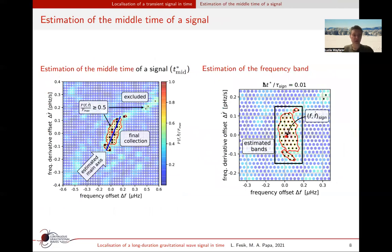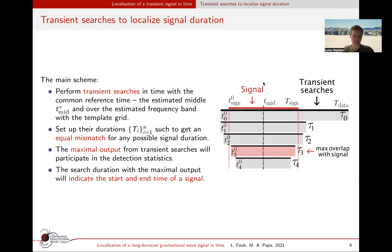Recovery of a transient signal profile at the estimated middle time allows us to localize the frequency-frequency derivative range for the post-following searches. From the initial search over all data with an appropriate template grid, we keep top candidates for further inspection and estimate the middle time of transient signal candidates. We estimate the frequency band around the signal's frequency parameters. With the estimated middle time and the frequency band of a signal candidate, we are able to apply transient searches to localize signal in time, to estimate the start and the end time of a transient signal in the data.